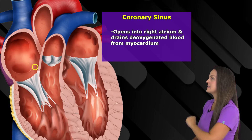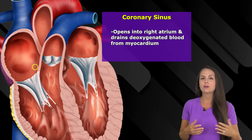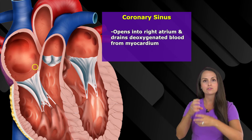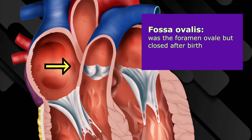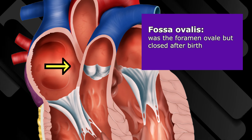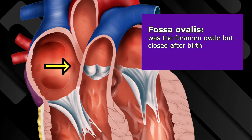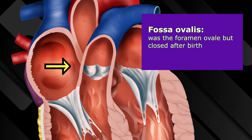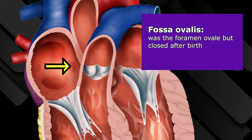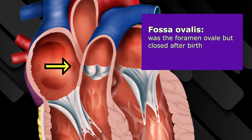The coronary sinus opens into the right atrium and drains deoxygenated blood from the myocardium — the middle layer of the heart that allows it to contract. Also within this chamber is the fossa ovalis, found in the wall between the right and left atrium known as the interatrial septum. This is a passageway in the fetal heart that allows blood to bypass the non-functioning lungs, since the placenta oxygenates the baby's blood in utero. After birth, when the baby takes its first breath, this area should seal shut. If it doesn't, it results in a patent foramen ovale (PFO), which can lead to clot formation and stroke.